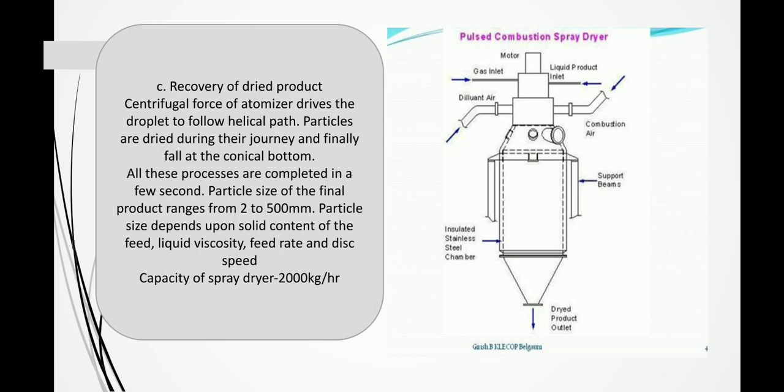The next stage is the recovery of the dry product. With centrifugal force, the droplet follows a helical path and the dried particles settle to the bottom. The particle size in the final product depends on the solid content, liquid viscosity, feed rate, and disk speed. A spray dryer has a capacity of 2,000 kg per hour to dry your material.